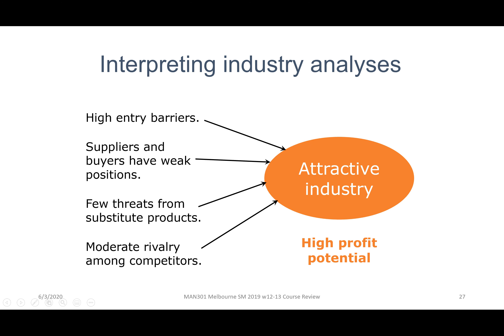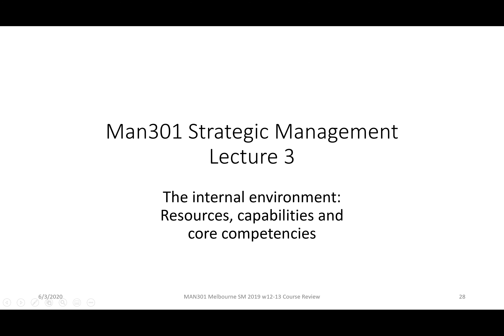By contrast, an attractive industry has high barriers to entry, suppliers and buyers in weak positions, few substitute products, and moderate rivalry. These two sets of forces create a continuum — one set creates an attractive environment, the other an unattractive environment — but you can have different combinations of those forces. It's the same forces, just whether they are weak or strong, high or low.